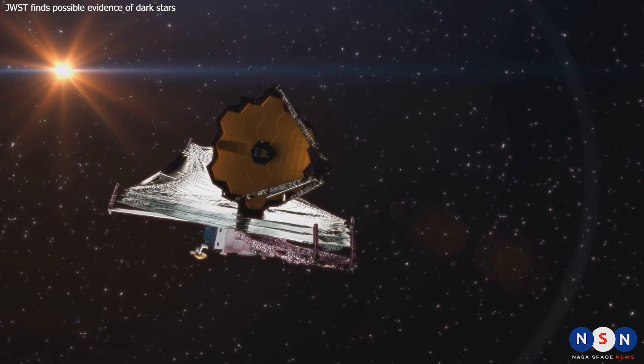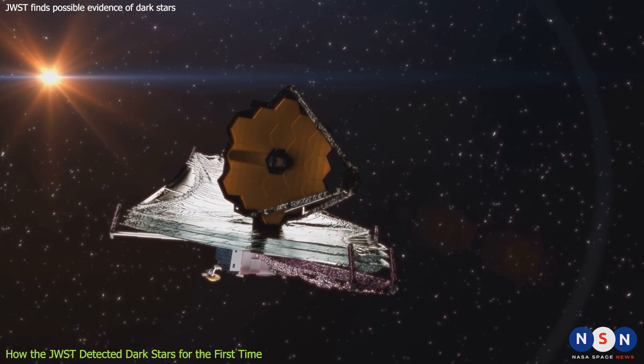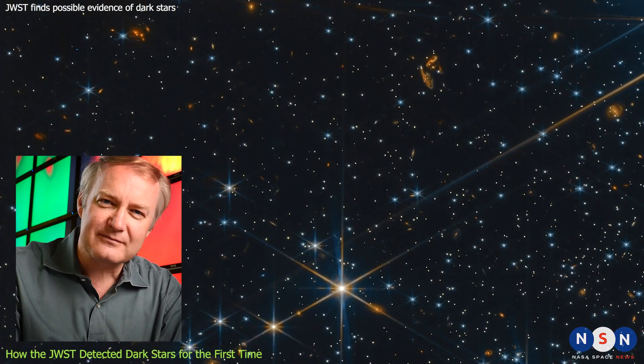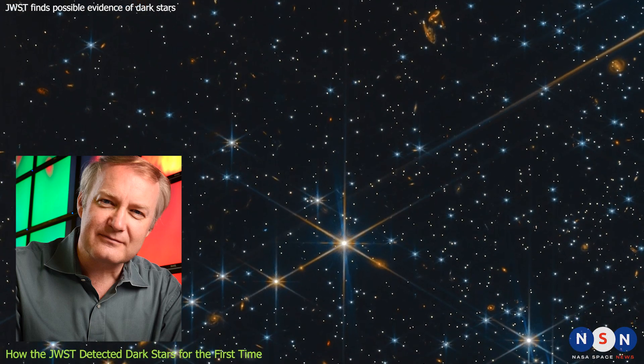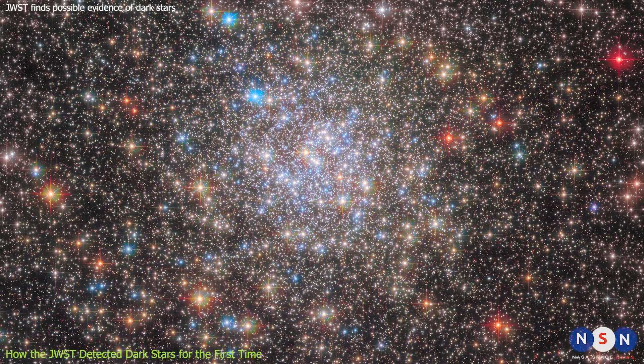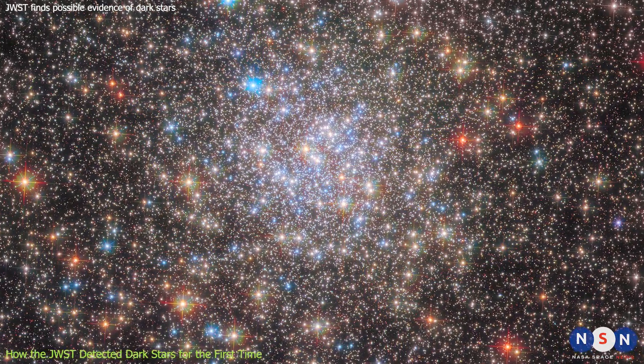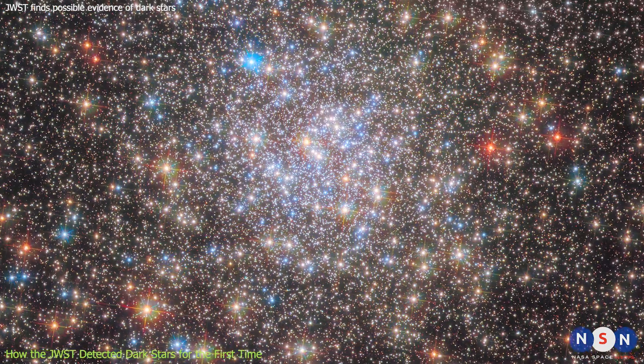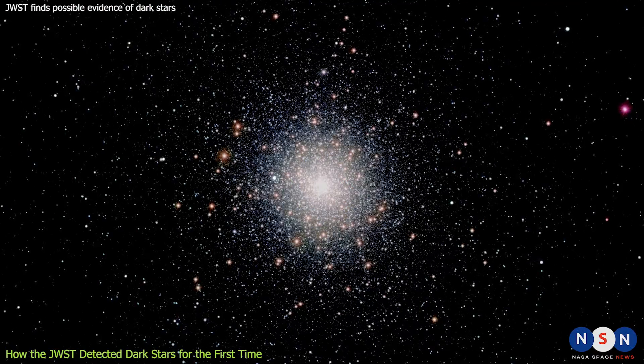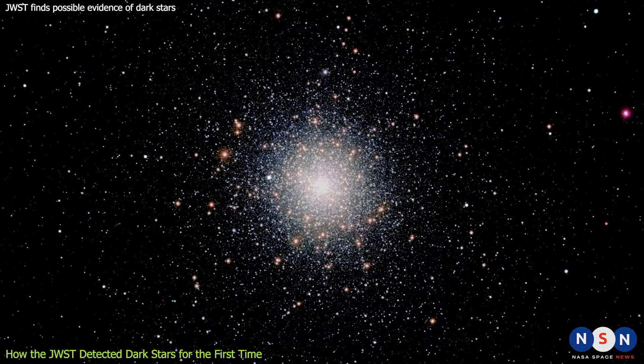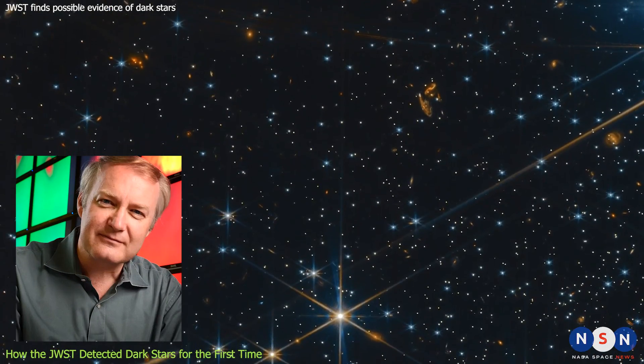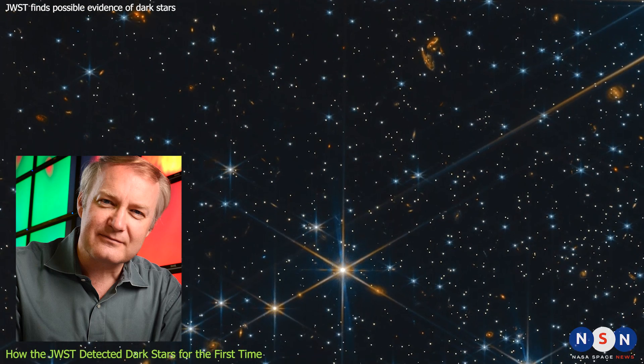That's where the James Webb Space Telescope comes in. In July 2023, a team of astronomers led by Volker Brahm used NIRSpec to conduct a survey of several globular clusters in our galaxy. Globular clusters are spherical collections of hundreds of thousands of old stars that orbit around the center of our galaxy. They are among the oldest structures in the universe, dating back to about 13 billion years ago. Brahm and his team were looking for signs of dark stars among these ancient stars.